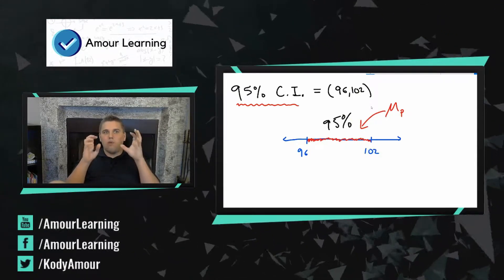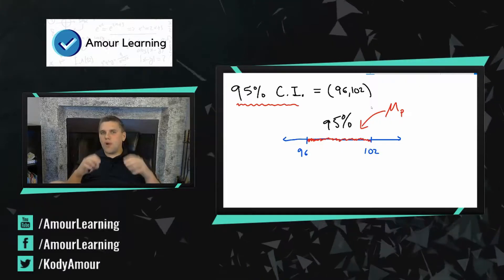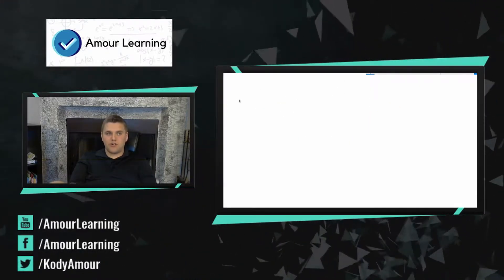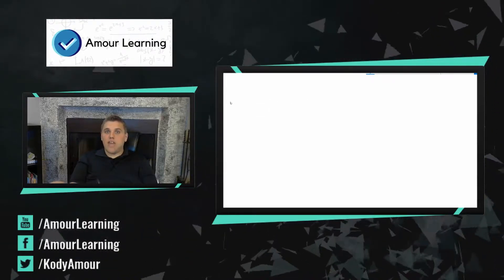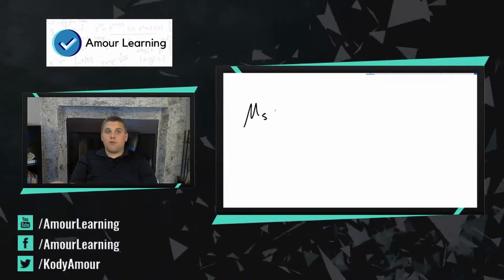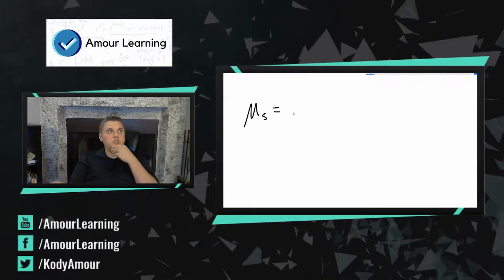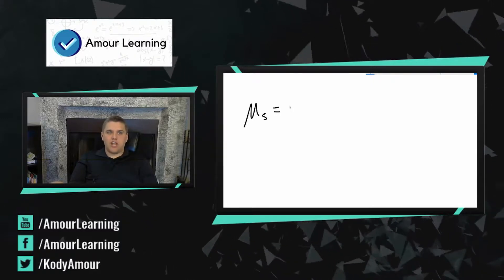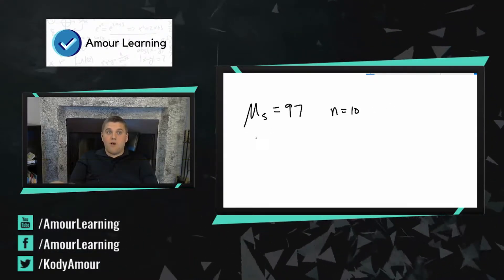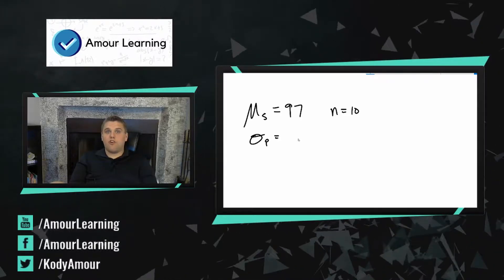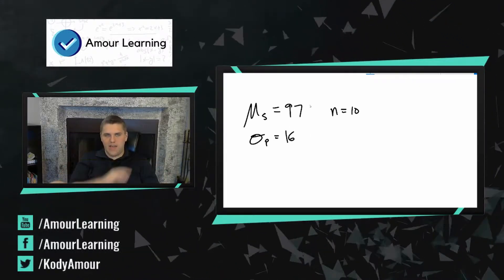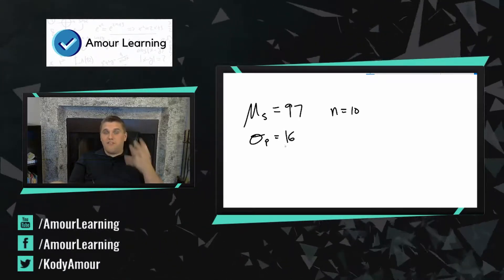That's a breakdown of what a 95% confidence interval is. Now let's break down how to find one of these things and how they work — this is the second portion of this lecture. Let's say you gather a sample and you have some statistics. The sample average IQ was 97, and you gathered 10 people. The population standard deviation for IQ is 16. Let's say I wanted to build a 95% confidence interval.